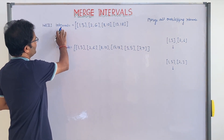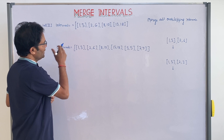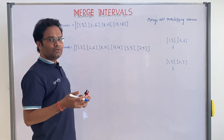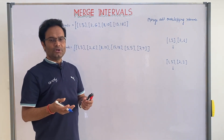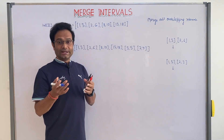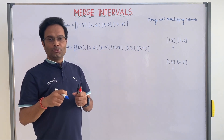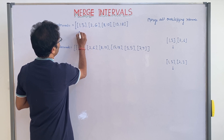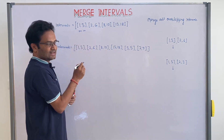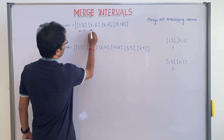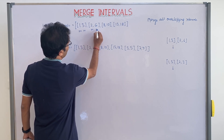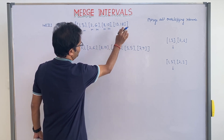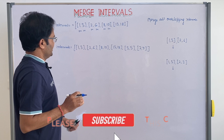Suppose you are given different intervals. An interval could be for any meeting time, study time, game time, court booking, or meeting room booking. So suppose this is from 1pm to 3pm — one meeting is there — and another meeting starts from 2pm to 6pm. You can understand this is a time frame with different time zones or different scenarios.